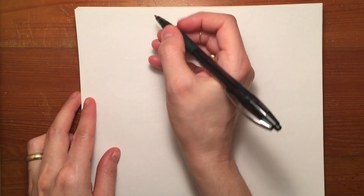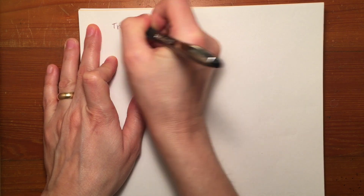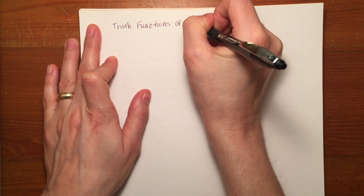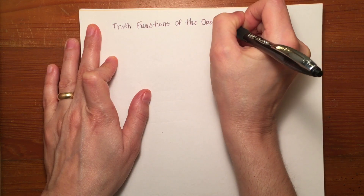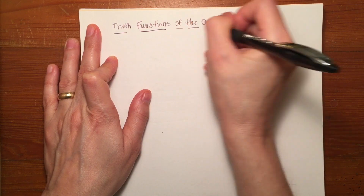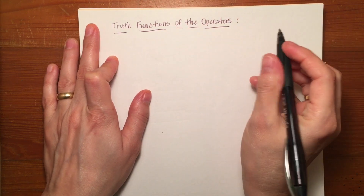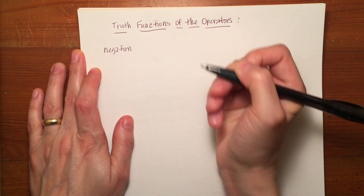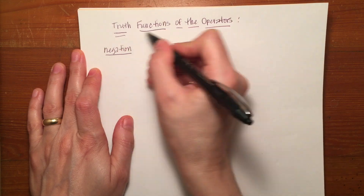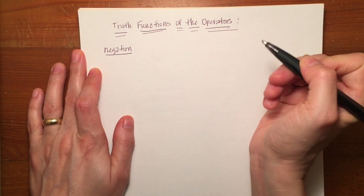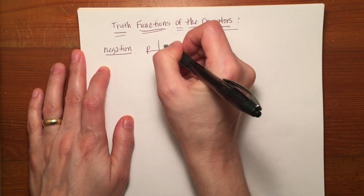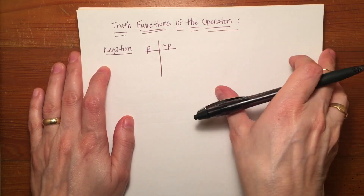Each one of the operators has its own little miniature truth table that shows its truth functions. I'm going to write them a little bit differently than they're written in your book because I find it to be a little less complex. So if we're talking about negation, we're talking about the tilde. In propositional logic and in symbolic logic, p's and q's are often used like x's and y's in math — they're just random variables.